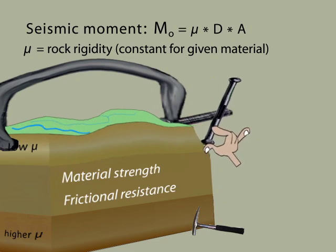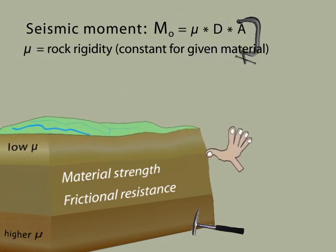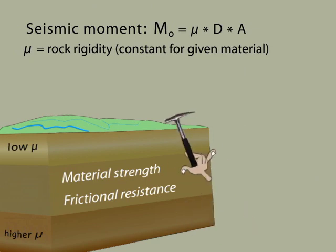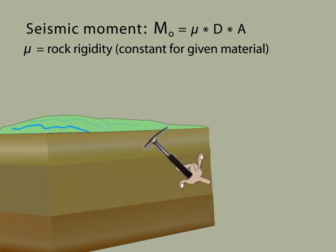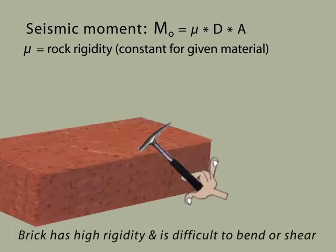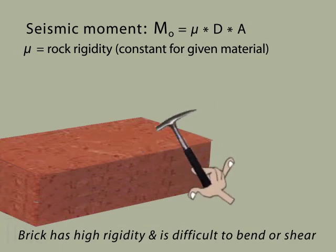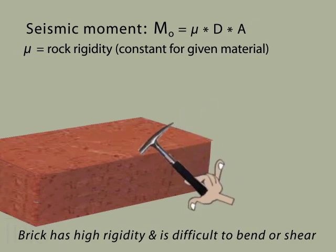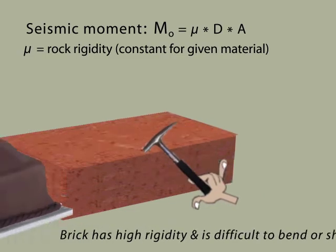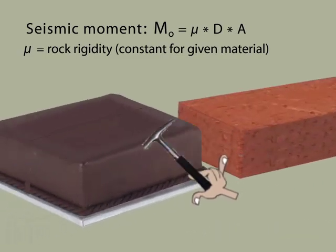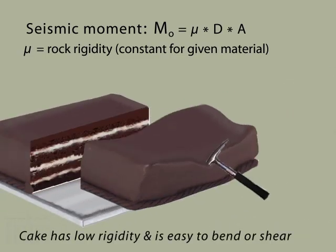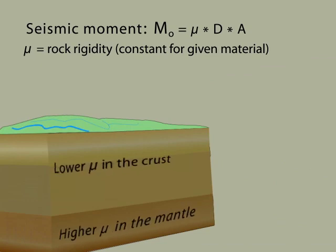More elastic energy is stored bending rocks of high rigidity than in rocks of low rigidity. For example, a brick has high rigidity and when bent or sheared would yield a strong earthquake. The cake has lower Mu and shears easily. Rock rigidity is lower in the crust than it is in the mantle.